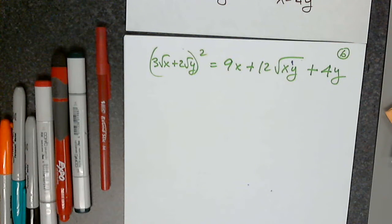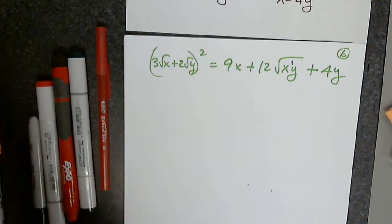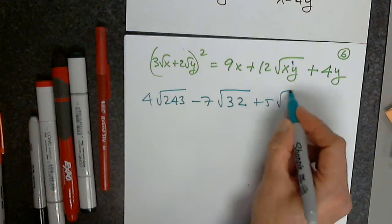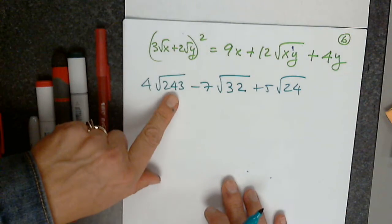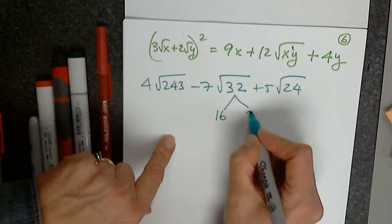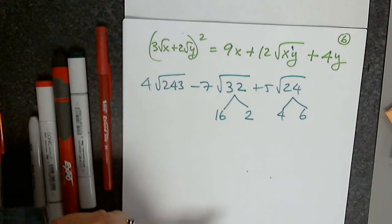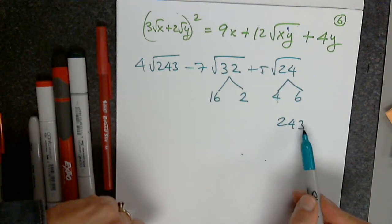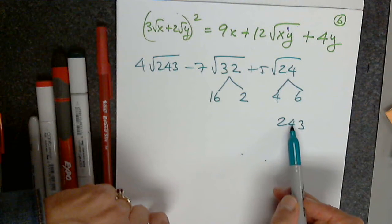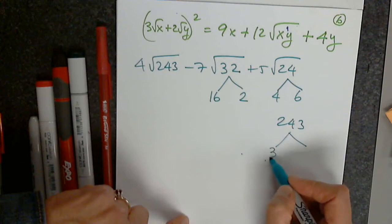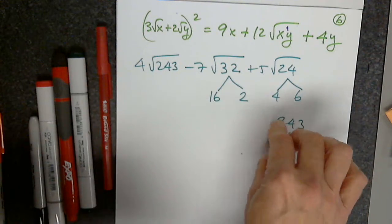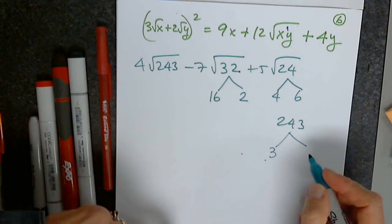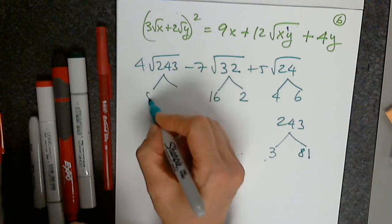9c: 4 times the square root of 243, minus 7 times the square root of 32, plus 5 times the square root of 24. The only number that may create problems is 243. If I add those digits: 2 plus 4 is 6, 6 plus 3 is 9, so this number is divisible by 3. Divisibility rule: if you add all the digits and the result is divisible by 3, then the original number is divisible by 3. So 243 equals 81 times 3 — and 81 is a perfect square.